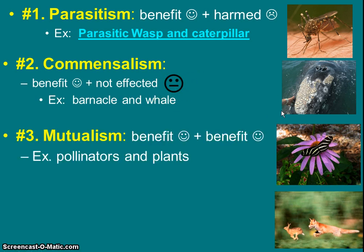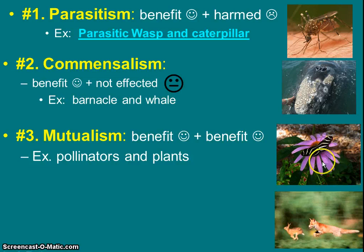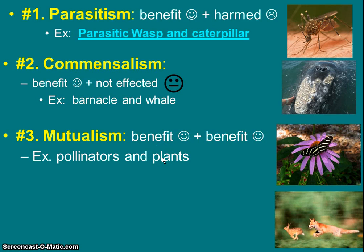The third example is mutualism, which has the word 'mutual' hiding in it, meaning both. If I'm having a mutual agreement between you and I, we are both agreeing — and that's what's happening here. Both organisms are benefiting. That gets back to our pollinator, the butterfly and the flower: the pollinator gets food — nectar and pollen — and the plant gets pollinated, reproducing better because of the butterfly's help. Both creatures are benefiting.